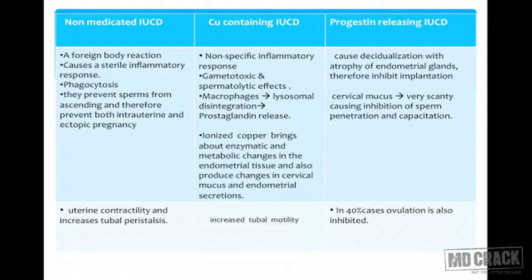Progesterone-releasing IUCDs release a small daily quantity of progesterone, causing decidualization and gradual atrophy of the endometrium — inhibiting implantation. They also alter cervical mucus, inhibiting sperm penetration and capacitation. In 40% of cases, ovulation is also inhibited with progestin-containing IUCDs.